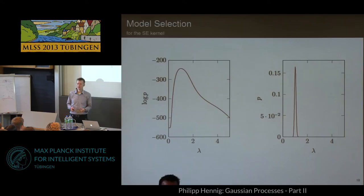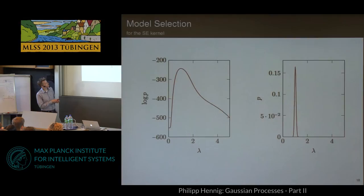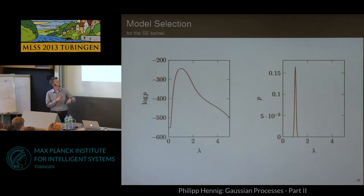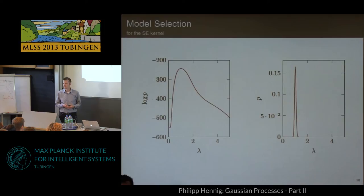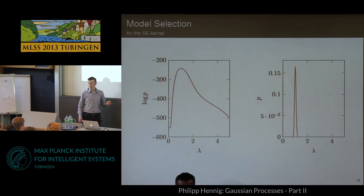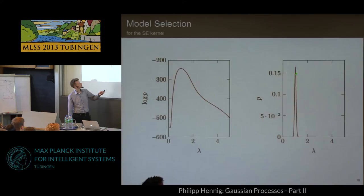If you have independent Gaussian likelihoods and a Gaussian process prior, you get the marginal likelihood for the observations. This is a likelihood for all the parameters of the model — the kernel parameters, the scalar, everything — but it's not necessarily Gaussian over those parameters. For a simple example: fixing all parameters except the length scale, the log marginal likelihood as a function of the length scale is asymmetric and not Gaussian. The actual probability distribution is very peaked, so we can be quite certain about what the length scale should be.